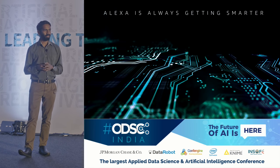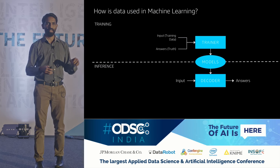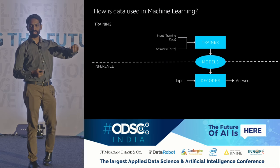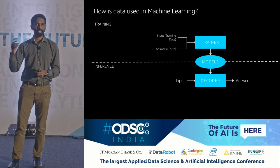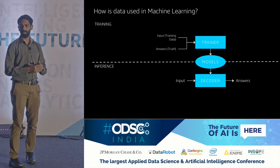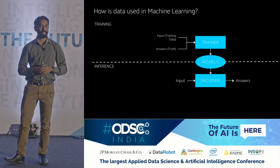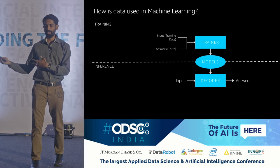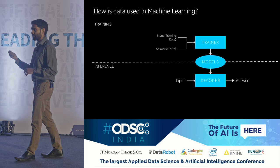Let's dive into how some of these things work. This is how we use data in machine learning — highly simplified, we split it into two phases: a training phase and an inference phase. In the training phase, before the Alexa device was launched, we'd input a lot of training data for speech recognition and natural language understanding, along with a ground truth — something empirical we know to be true. We'd put all of that through a trainer and produce models. In the inference phase, when a user interacts with Alexa, the decoder infers the output. If your training data is very good, your decoder will be good and you'll get great results with speech recognition and natural language understanding.